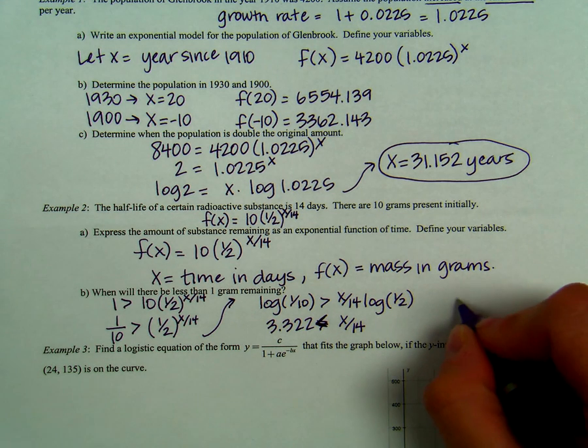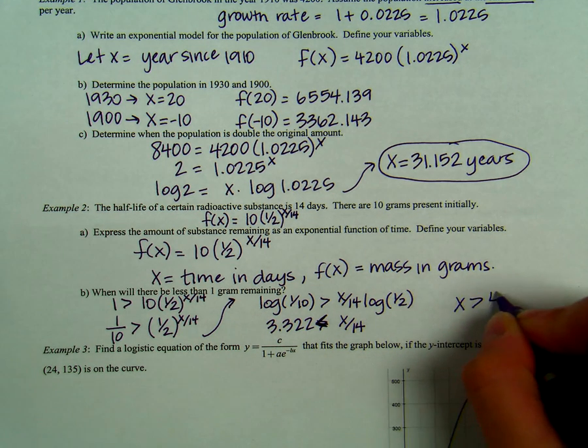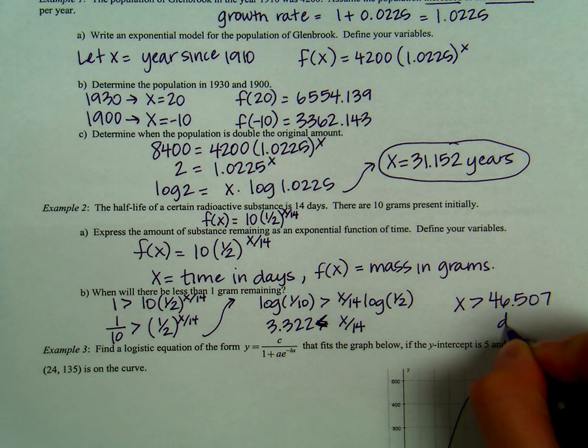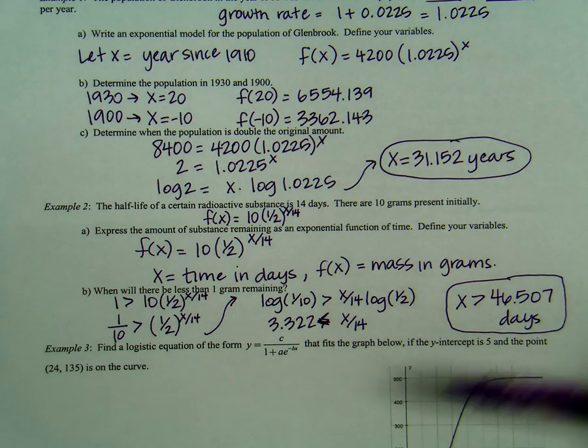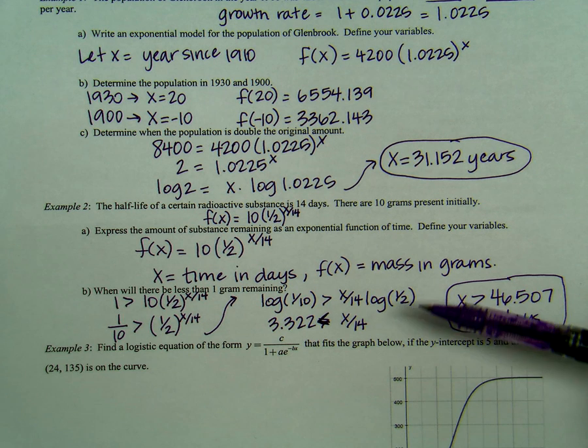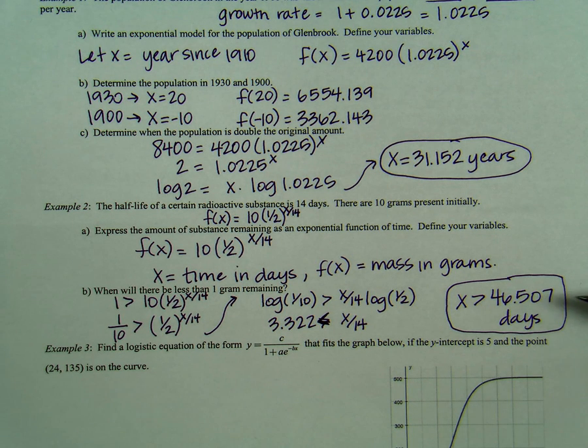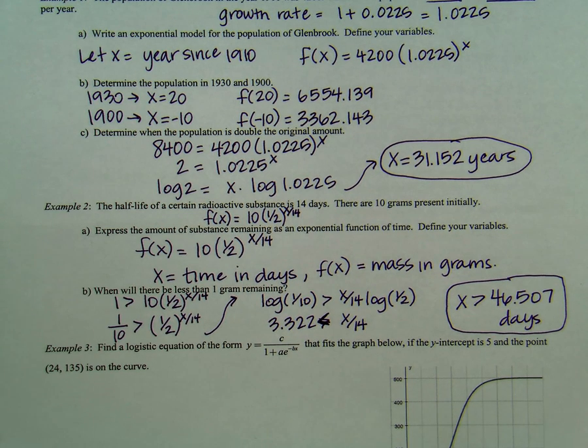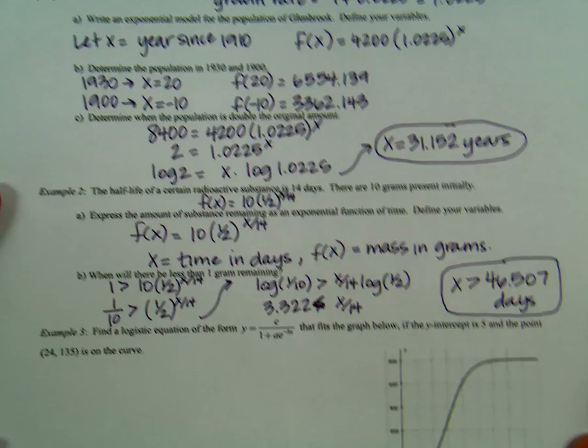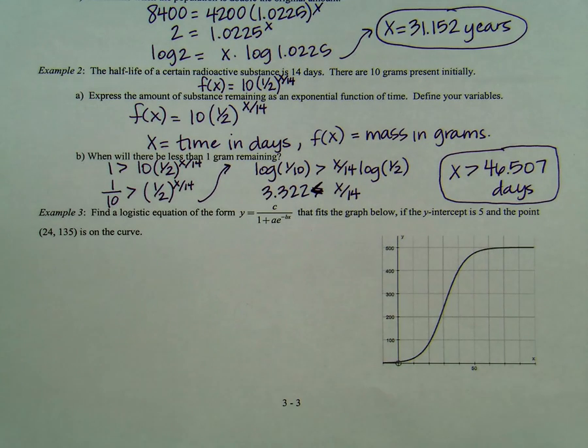And then when you multiply both sides by 14, you will see that x has to be greater than 46.507 days. It's really important when doing these problems that you keep your data in your calculator so that you always have the exact data and you round your final answer to 3 decimal places.